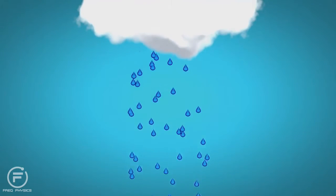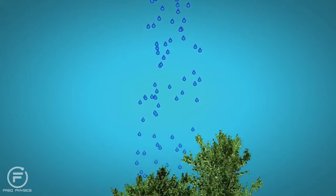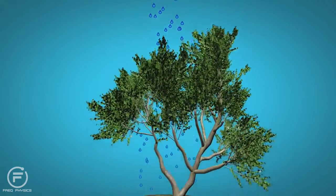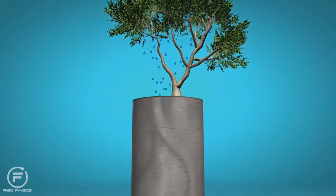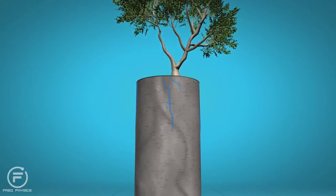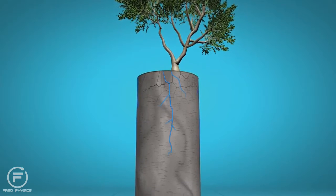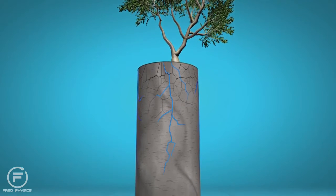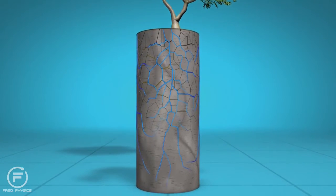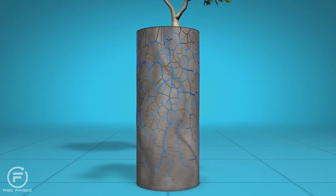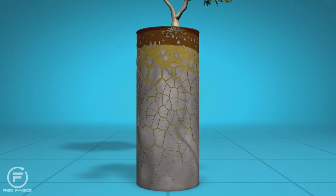Soil — the skin of the earth — is created where water meets rock. Rainwater seeps into the rock through cracks and chemical reactions slowly dissolve the rock. In the process, clay minerals are formed and organic carbon accumulates near the surface. The weathering process proceeds slowly.